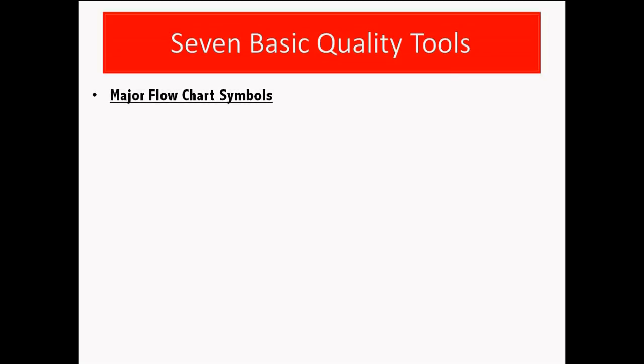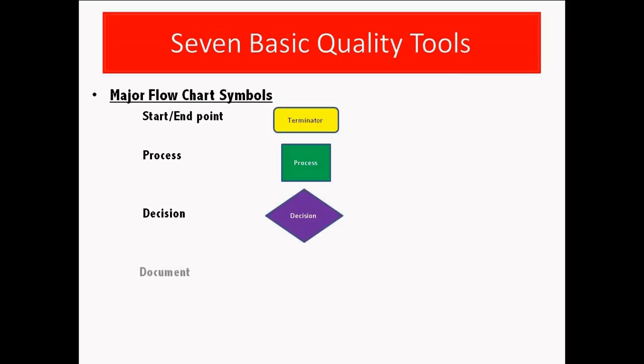There are specific symbols that were defined for each task within the process. Let's learn some major symbols in the flow chart. Start and end of the process also called the terminator. We can use this symbol for the process. For the decision making stage, we can use this symbol. For the document, this is the symbol for the document. Arrow, the arrow is the symbol which connects all these symbols each other.